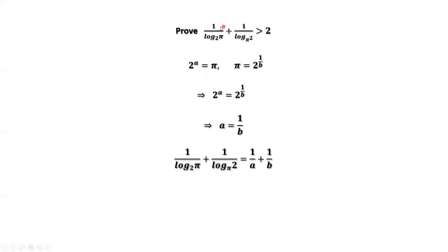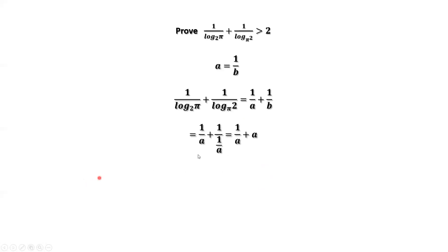Let's consider the original question, the left-hand side. By our new definition, the left-hand side equals 1 over A plus 1 over B. From this result, we have B equals 1 over A. We replace B by 1 over A. Simplifying this part, we have 1 over A plus A.